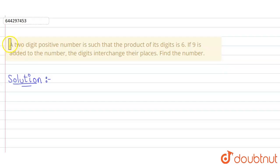Hello guys, so our question is: a two-digit positive number is such that the product of its digits is 6, and if 9 is added to the number, then the digits interchange their places. We have to find the number.